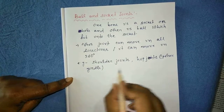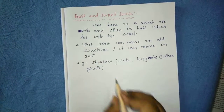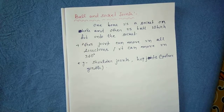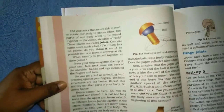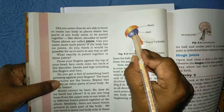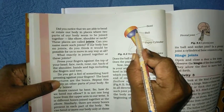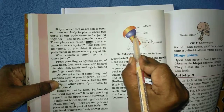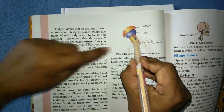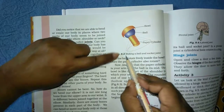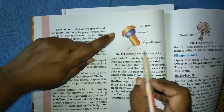The hip joint is also called the pelvic girdle, and shoulder joints are called the pectoral girdle. Here in the book a picture is given so you can get a clear idea regarding this joint. This is the ball, this is the socket, and the ball is inserted into the socket, making a ball and socket joint.